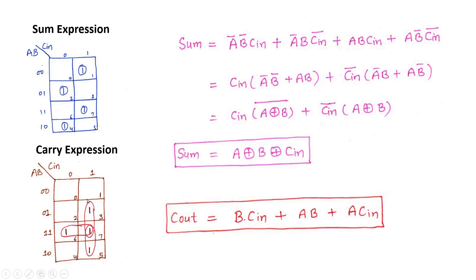For carry, it is relatively simple. For the first circle, B is common — A and A-bar cancel — so we write B C-in. For the next term from the second circle, C-in is zero in one cell and one in the other so it cancels, giving A B. For the third circle, B is one and zero so B cancels out, giving A C-in. So the final carry expression is: carry = A B + B C-in + A C-in.